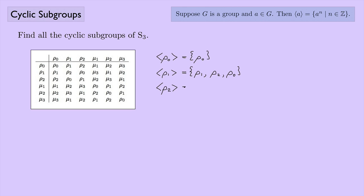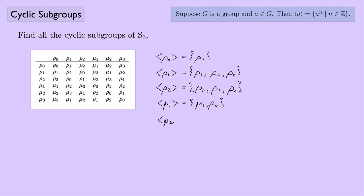For ρ2: ρ2·ρ2 = ρ1, and ρ2·ρ1 = identity, giving the same subgroup {ρ0, ρ1, ρ2}. For μ1: μ1·μ1 = identity, so ⟨μ1⟩ = {ρ0, μ1}. For μ2: μ2·μ2 = identity, giving ⟨μ2⟩ = {ρ0, μ2}. And μ3 has the same structure — μ3·μ3 = identity — giving ⟨μ3⟩ = {ρ0, μ3}. So these are all the cyclic subgroups of S3.